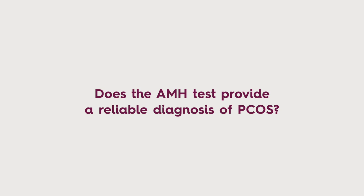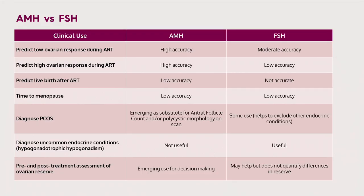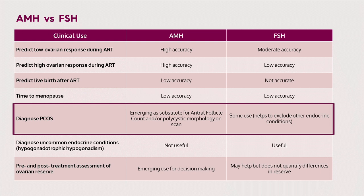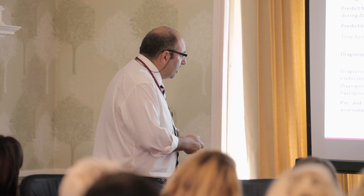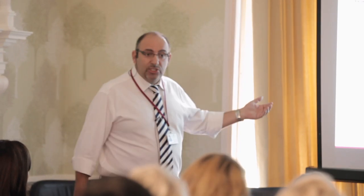Another benefit of AMH is in diagnosing endocrine conditions, particularly PCOS — a very common hormonal complaint in primary care. One of the challenges with diagnosing PCOS has been the requirement for a scan to show polycystic ovaries or a high follicle count. Research is now showing that you can use AMH instead of a scan. So if a woman has irregular periods every two or three months and you suspect PCOS, it is possible to use AMH instead of a scan — which could be very useful in primary care.